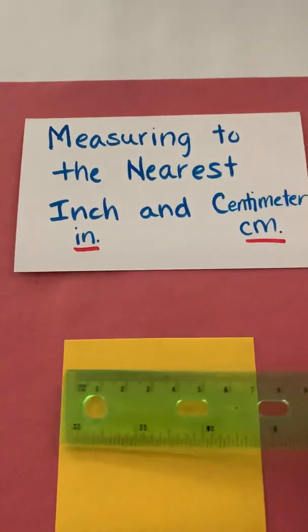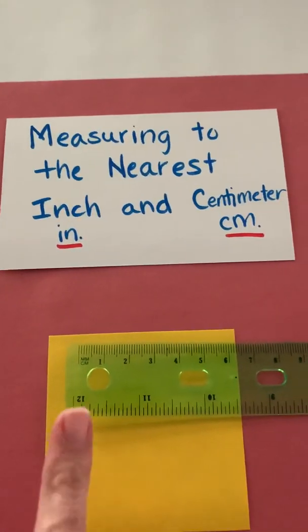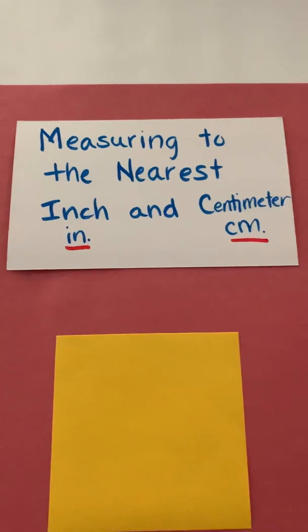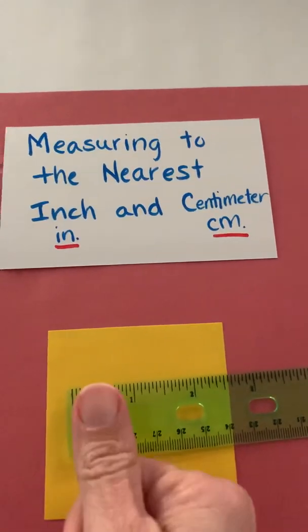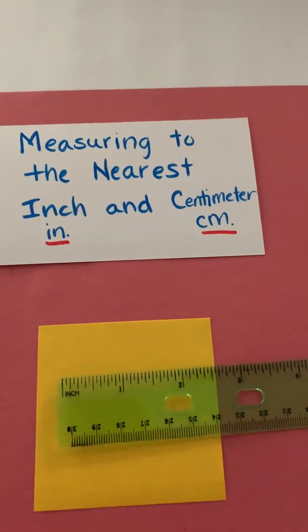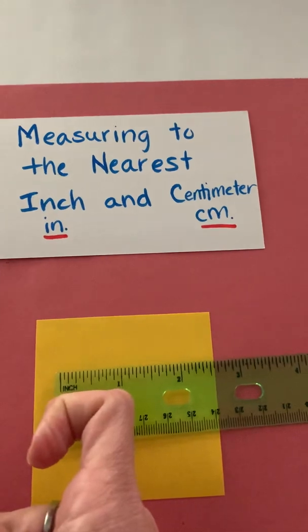So on a ruler, a lot of times you will have a centimeter side. We can think of a centimeter as usually about the width of our pinky, and then you will have an inches side, which to me is about the width of my thumb. For some of you it may be about the width from one joint to the other there.